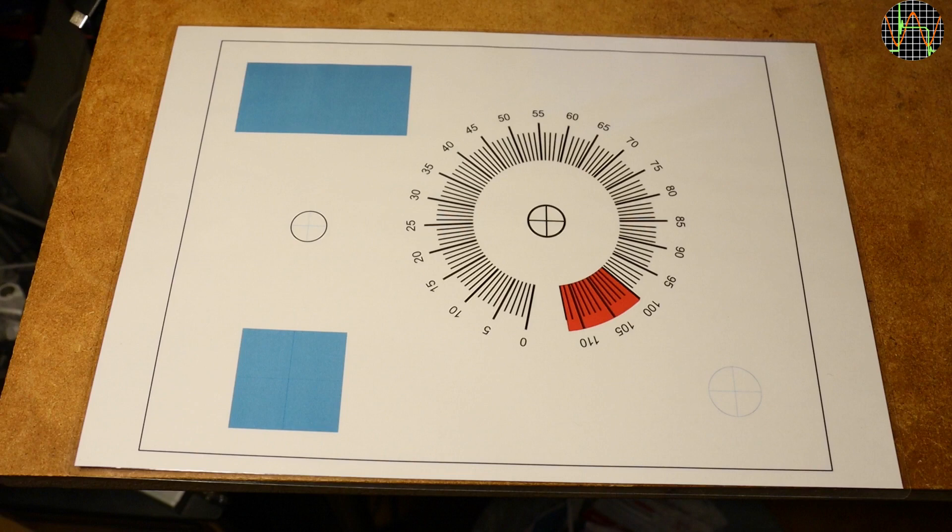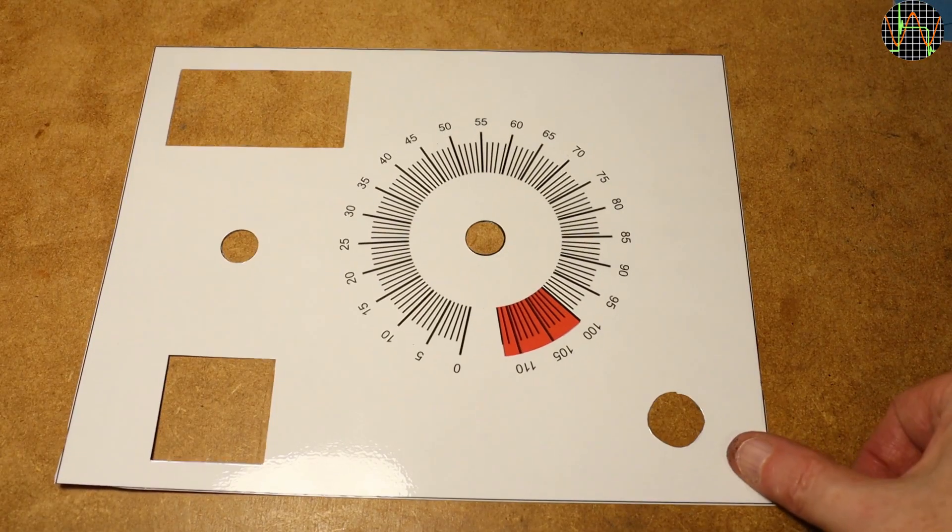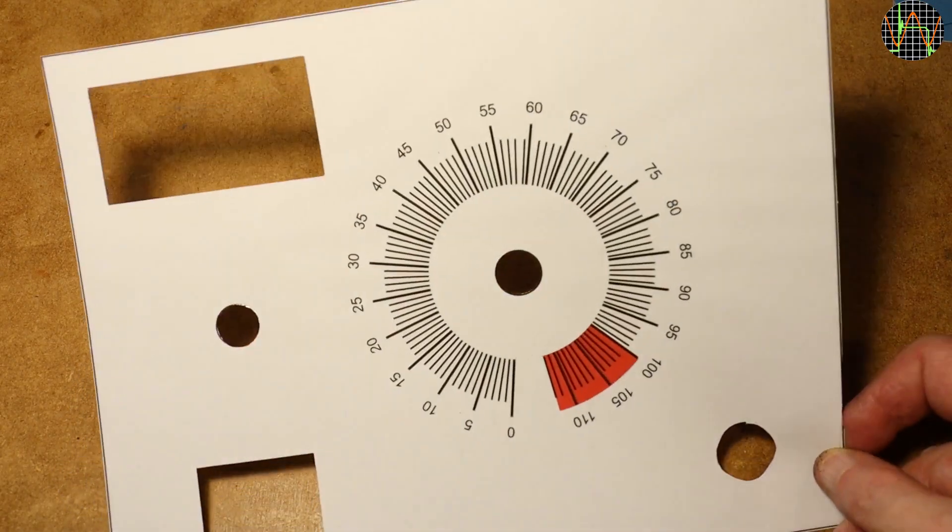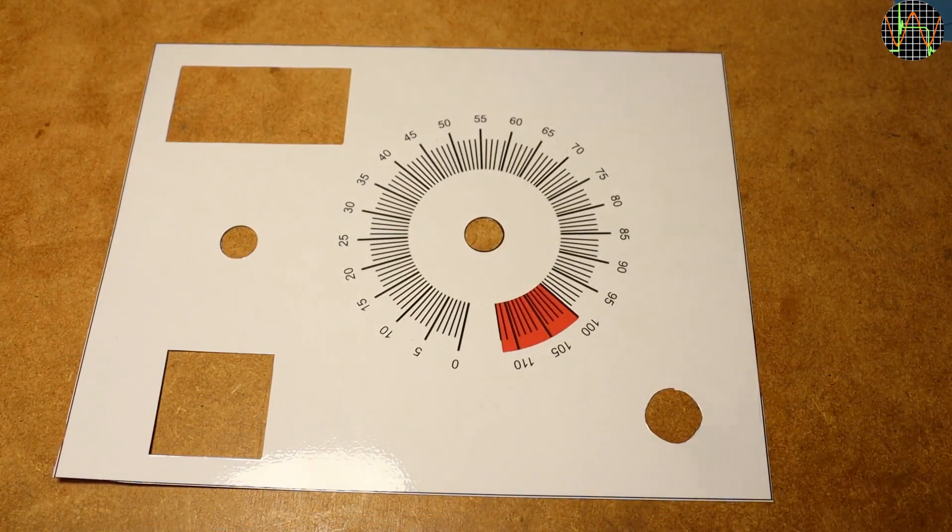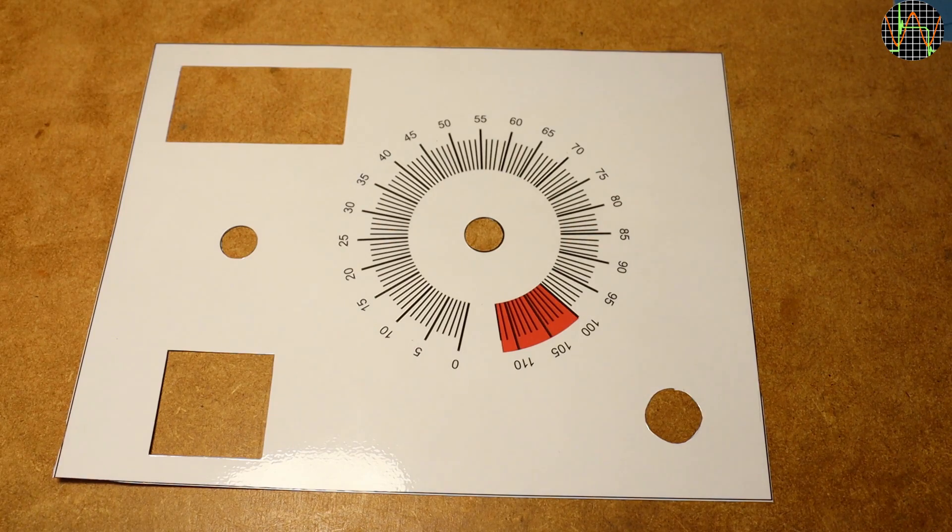The two blue areas represent cutouts for the output socket and the panel meter. Once laminated, I cut out the necessary holes using a sharp knife. I only wish it was as easy to cut the metal of the enclosure. I have a separate video about making laminated front panels this way and add a link in the description.